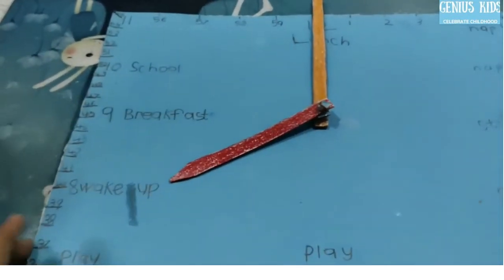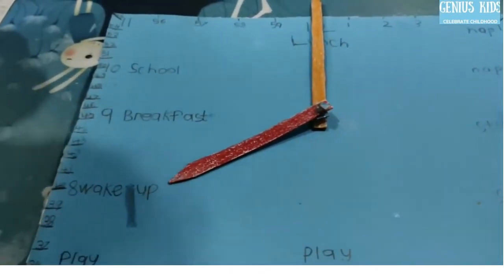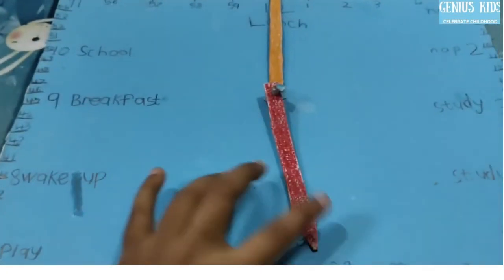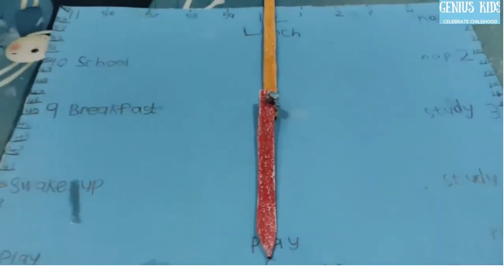So where is the small one pointing? Which number? 8 o'clock. So it is 8 o'clock. Now it is? 6 o'clock. Good.